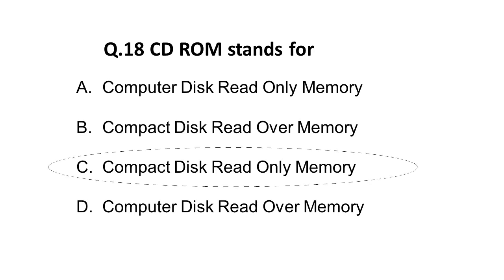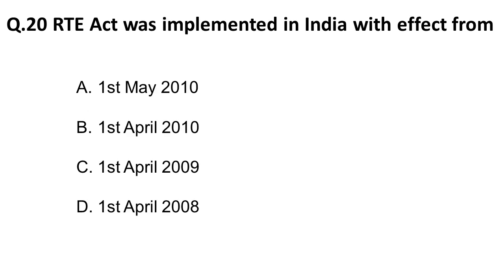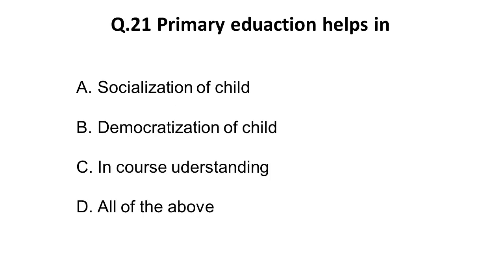The nineteenth question: GIF, JPG, BMP, PNG are extensions for which type of file? These are extensions for image data. The twentieth question: the RTE Act — Right to Education Act — was implemented in India with effect from when? It was implemented in India from the 1st of May 2010. According to this act, the government has made primary education mandatory in India. This act came into effect from 1st May 2010.